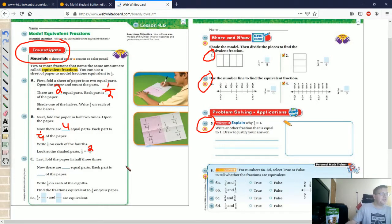And then if I fold the paper in half a third time, we are going to go to eight equal parts and each part is going to be one eighth of the paper.